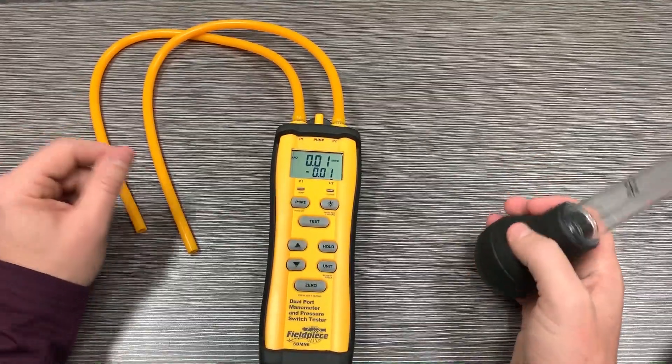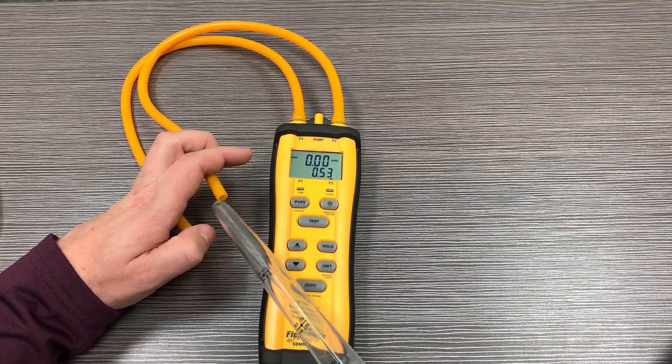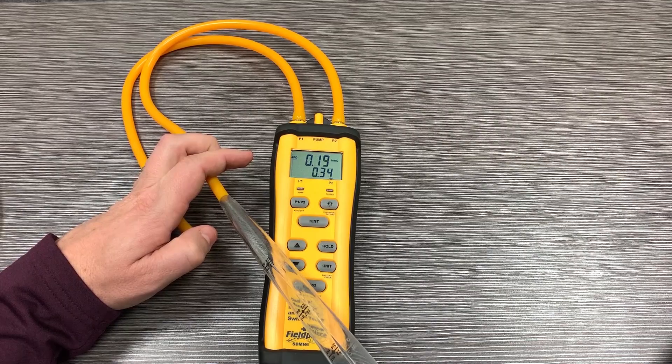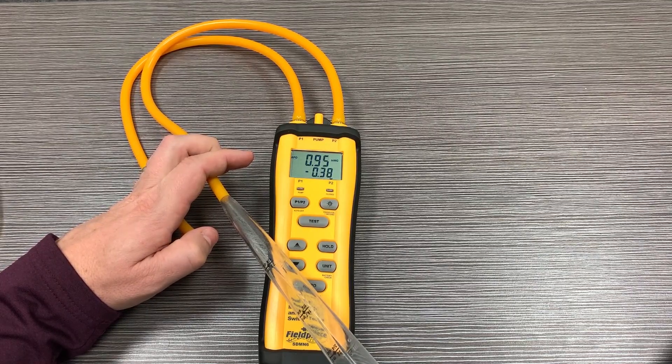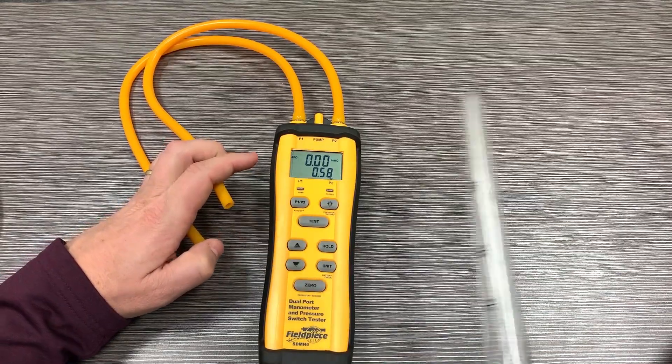Now if we wanted to do something a little bit more complicated, I'm going to trap a little bit of positive pressure in that P2. Now if I affect P1, we're going to see the delta, the difference between the two, on the bottom, and the absolute pressure on P2 represented on top.